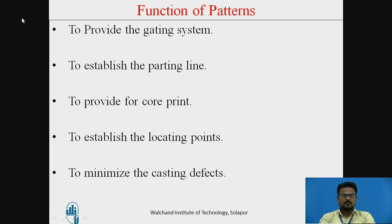When the pattern is curved, the pattern should have a parting line on it to locate the parting line in the mold. The third function is to provide for core prints — when cores are used in the mold, the pattern should provide proper core prints in the mold cavity. Next, to establish locating points: locating points on the casting are essential to check casting dimensions after casting for machining, and this is done using patterns. Next is to minimize casting defects — a good pattern should produce a defect-free mold and hence a good casting, achieved by using a clean and properly designed pattern.